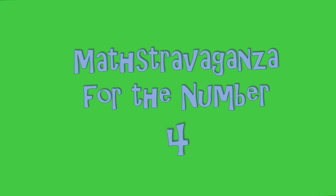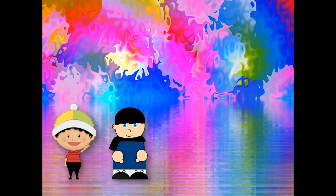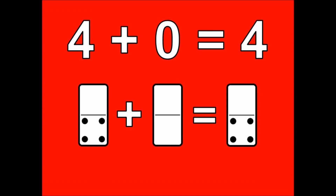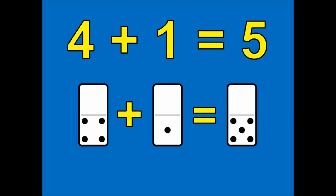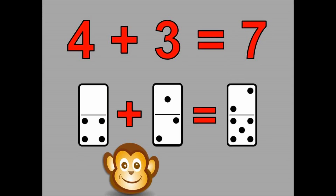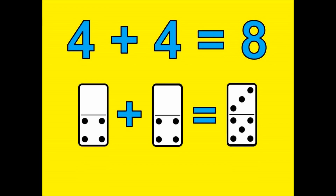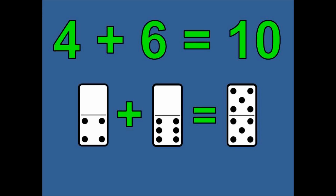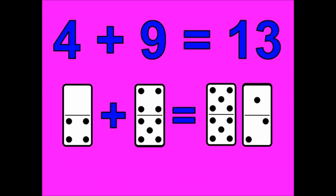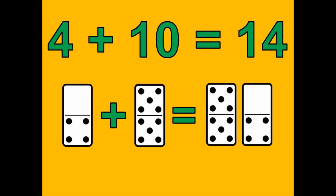Silly School Sounds! Come on kids, everybody let's add by four. Four plus zero is four. Four plus one is five. Four plus two is six. Four plus three is seven. Four plus four is eight. Four plus five is nine. Four plus six is ten. Four plus seven is eleven. Four plus eight is twelve. Four plus nine is thirteen. Four plus ten is fourteen.